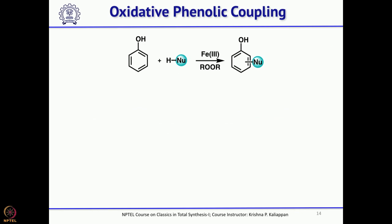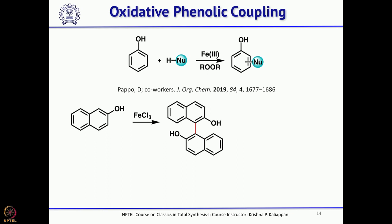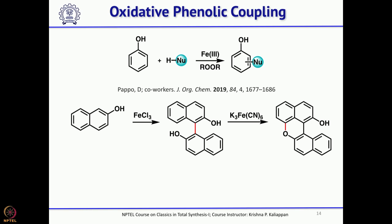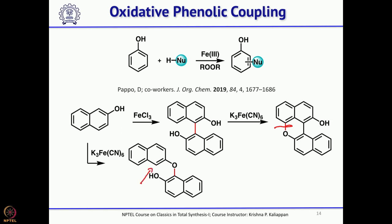As an example, if you take 2-naphthol and treat it with ferric chloride — this is one of the key reactions done on a ton scale to form BINOLs — or use further oxidation with potassium ferricyanide, it can form the coupled bond. This is again through radical coupling and it can also couple to the other side. Chapman has cleverly used a combination of oxidative phenolic coupling and intramolecular type 1 Diels-Alder reaction as key reactions to synthesize carpanone.